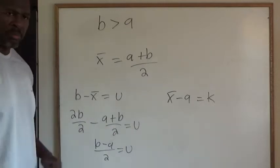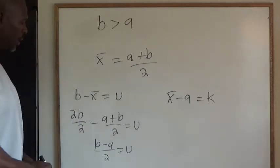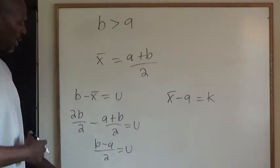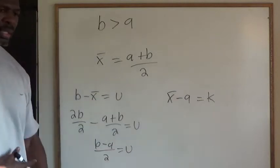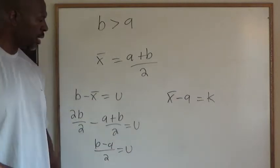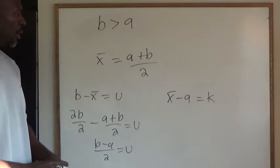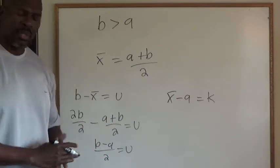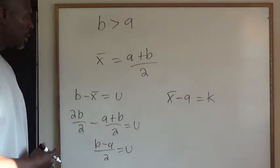So U is B minus A over 2. So now we have to see if K equals the same thing. If so, then we have successfully proven that all pair of numbers are equal distance from their average.